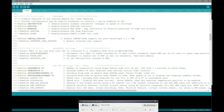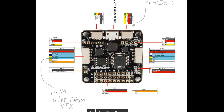Once you've done that, save and then compile and upload to board. This is an image of the SP Racing F3 board clone that I'm using, indicating where I've wired in the OSD. Pay particular note to pin six where I have the VTX PWM wire.